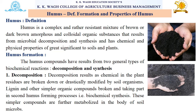There are two steps of humus formation: the first one is decomposition and the second one is synthesis. Decomposition results as the chemical compounds in the plant residues are broken down or drastically modified by soil organisms. Lignin and other simple organic compounds are broken down and take part in the second humus-forming process, that is biochemical synthesis. These simpler compounds are further metabolized in the body of soil microbes.